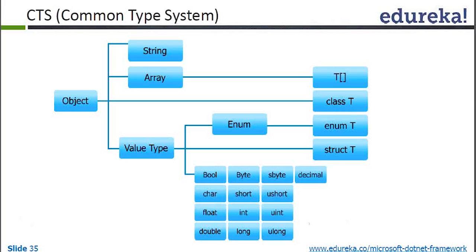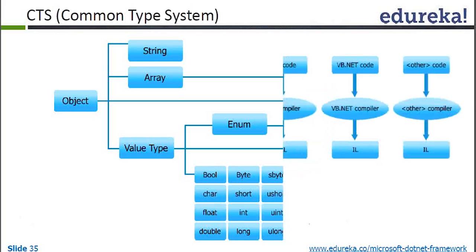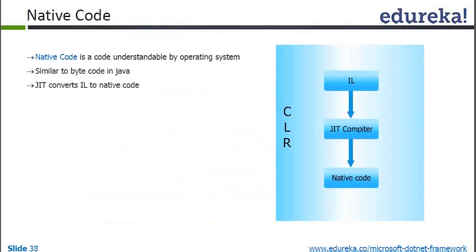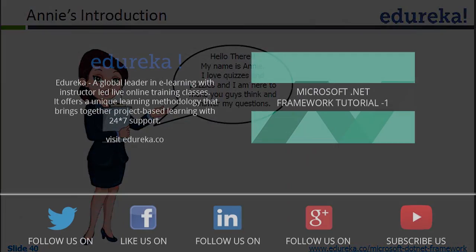Native code is nothing but a particular operating system's understandable code, which is very faster in execution. All data types supported in .NET are part of the Common Type System. This will be understood more clearly in a bit.